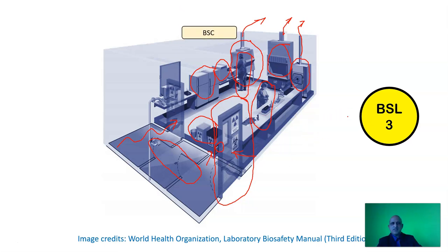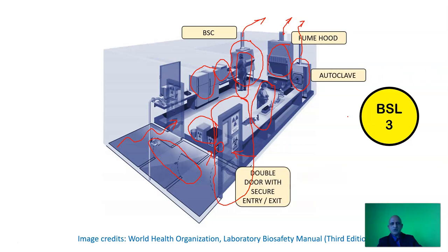That's the biological safety cabinet, the fume hood and the autoclave, and the double door with the secure entry and exit and the directional airflow. These are the components which are required in order for a laboratory to be categorized as a BSL-3 facility.